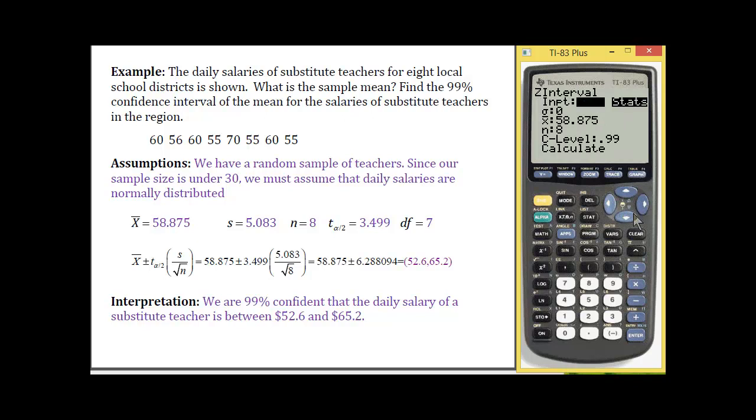And much of the same format for the menu is there, so you can compute a Z interval from your data. And you'll notice that one difference here is that you have to then specify that sigma.